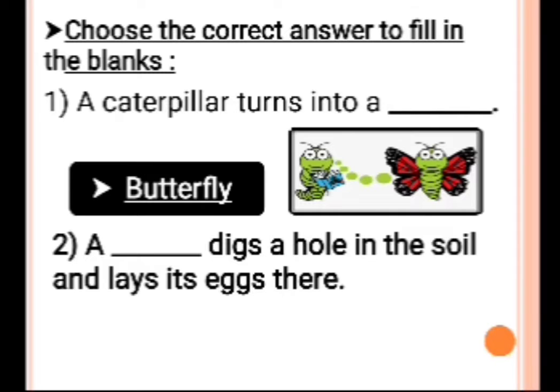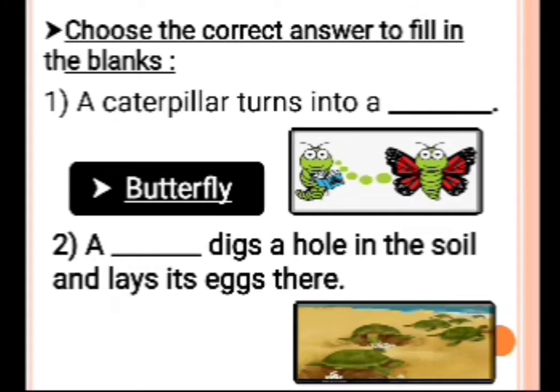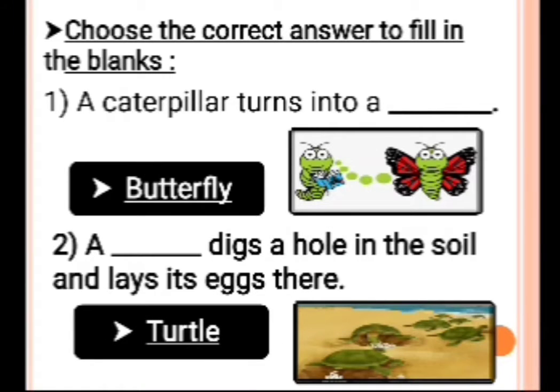Number 2: A dash digs a hole in the soil and lays its eggs there. Answer is turtle. A turtle digs a hole in the soil and lays its eggs there.